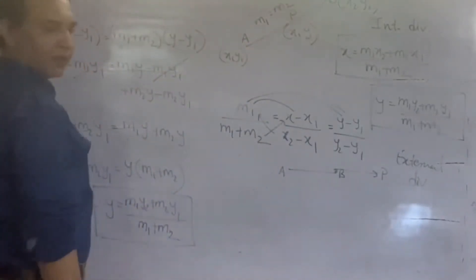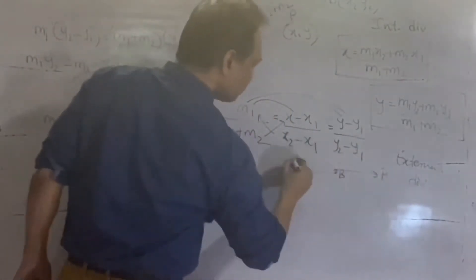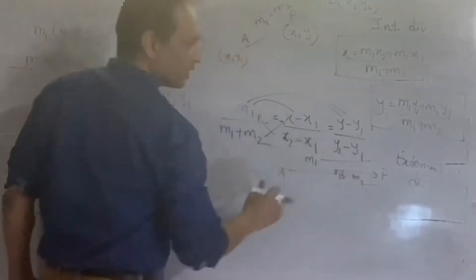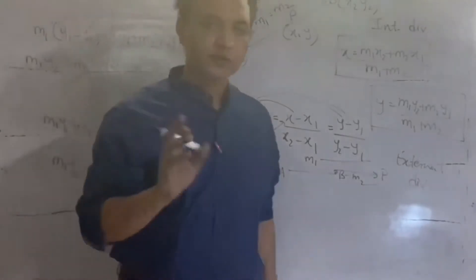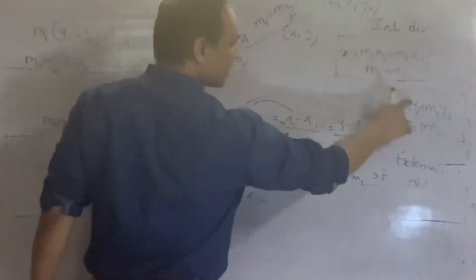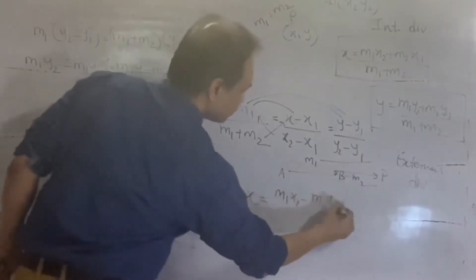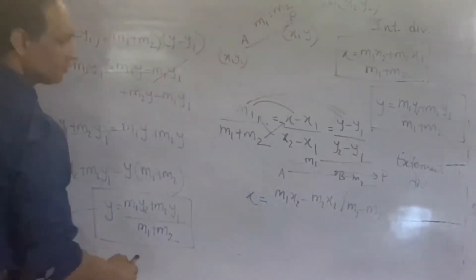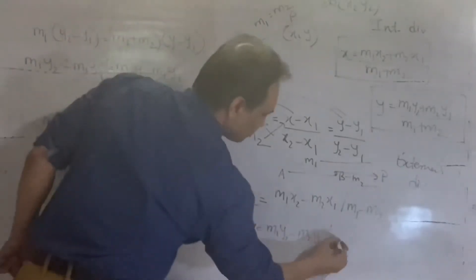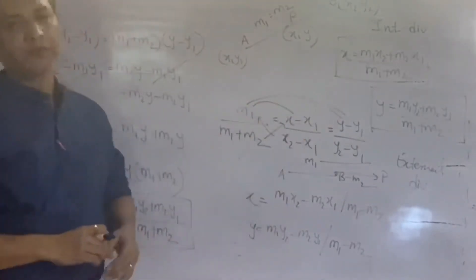External Division में तब भी M1:M2 वही रहता है — AP और PB का ratio। External Division के case में जो formula होता है वो same रहता है लेकिन plus की जगह minus होता है। X = (M1X2 - M2X1) upon (M1 - M2) और Y = (M1Y2 - M2Y1) upon (M1 - M2)। जहाँ plus है वो Internal Division है, जहाँ minus है वो External Division।